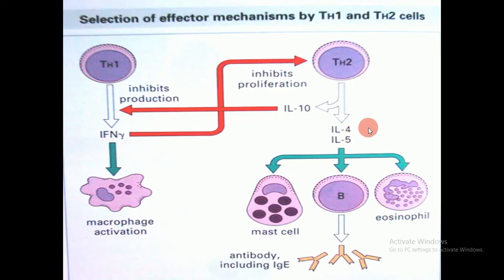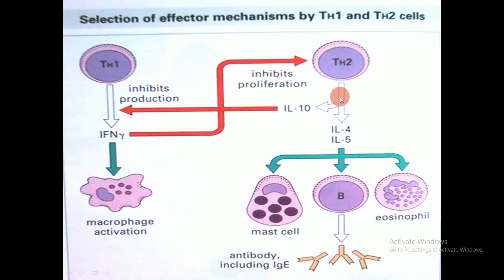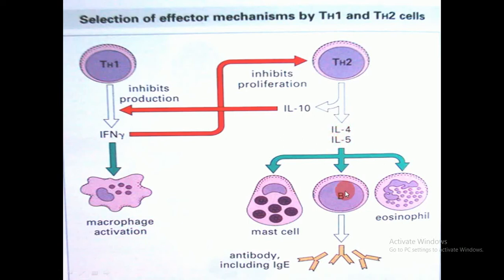This figure shows the effector mechanisms of T-helper 1 and T-helper 2. T-helper 1 secretes interferon gamma that activates macrophages and is responsible for cell-mediated immunity, with direct inhibitory effect on T-helper 2. T-helper 2 secretes interleukins 4, 5, and 10, causing downregulation of T-helper 1, and is responsible for humoral immunity by acting on B lymphocytes, mast cells, and eosinophils, stimulating IgA and antibody secretion.